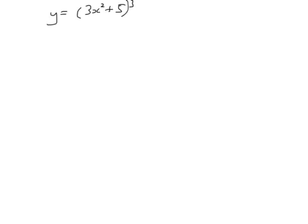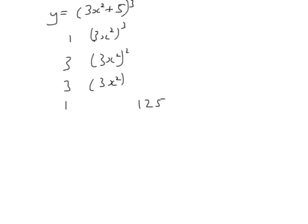So 3x squared plus 5 cubed, the binomial coefficients are 1, 3, 3, 1. It's 3x squared cubed. 3x squared squared is 3x squared. And then we need 5 to the power 3, that's 125. 5 to the power 2, that's 25. 5 to the power 1, 5 to the power 0.